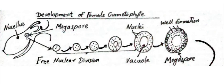In this megaspore, first the size increases, then free nuclear division occurs and about 2000 nuclei are produced. In the central part a central vacuole is produced and nuclei are arranged on the peripheral side. Then a watery cytoplasm is produced in the center, the vacuole disappears, and wall formation starts from the peripheral — from the outer side toward the center. Wall formation occurs first around the nuclei near the outer wall, then proceeds toward the center of the megaspore.